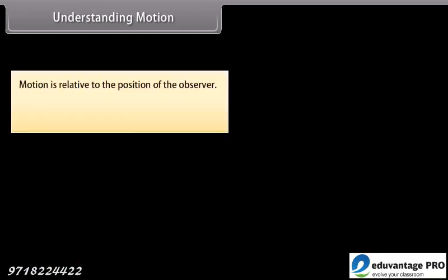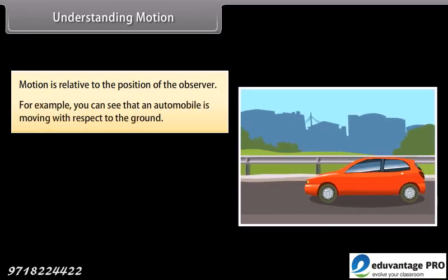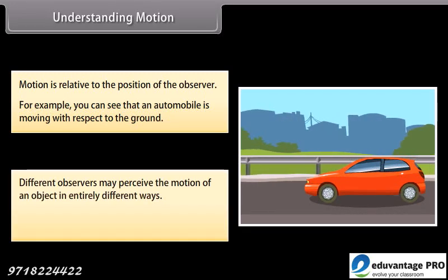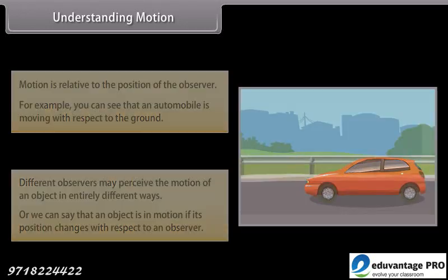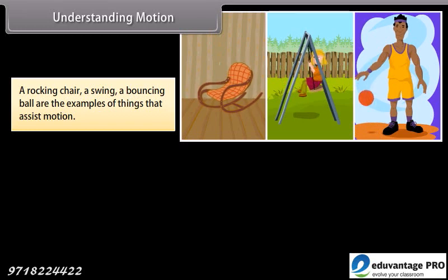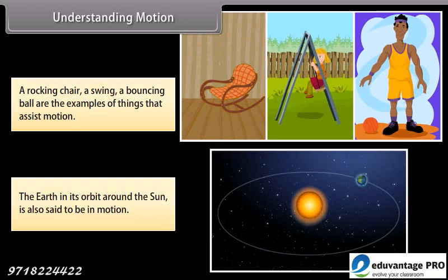Motion is relative to the position of the observer. For example, you can see that an automobile is moving with respect to the ground. Different observers may perceive the motion of an object in entirely different ways. An object is in motion if its position changes with respect to an observer. A rocking chair, a swing, and a bouncing ball are examples of things that exhibit motion. The earth in its orbit around the sun is also said to be in motion.